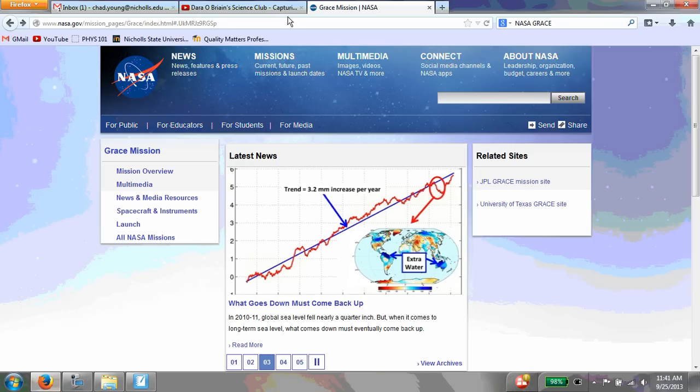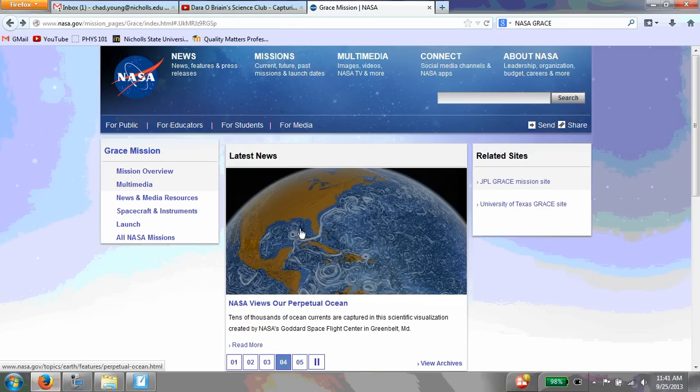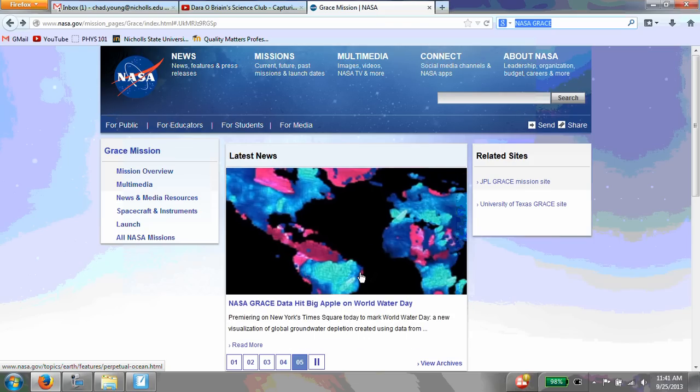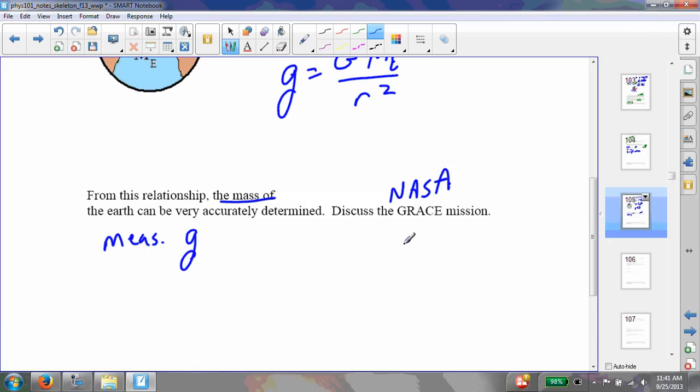Here we go. So this is the NASA GRACE mission. If you want to look it up, just look for NASA GRACE. They can provide a view of the Earth that takes into account the mass. This would be nice, for example, if you're looking for water tables or oil deposits or things where the mass of the Earth or the makeup of the mass of the Earth varies.